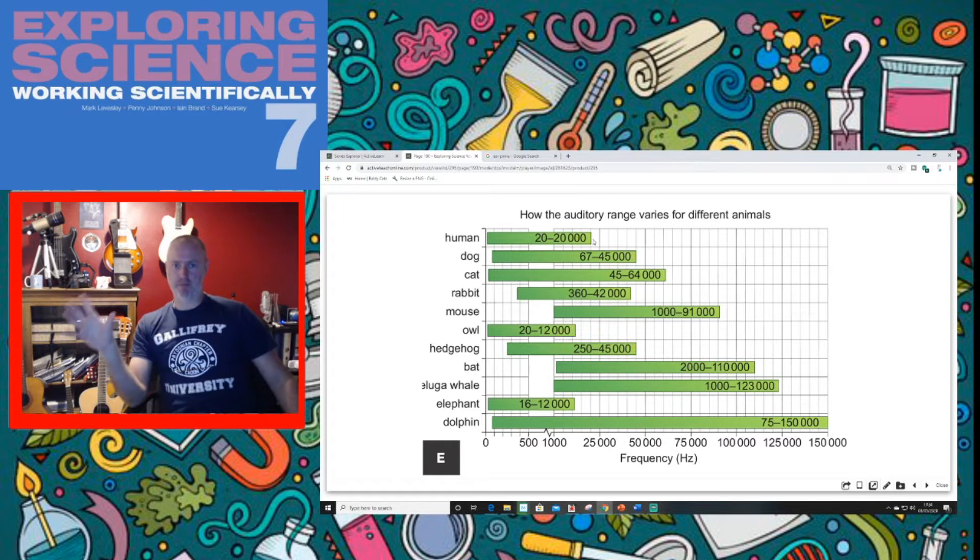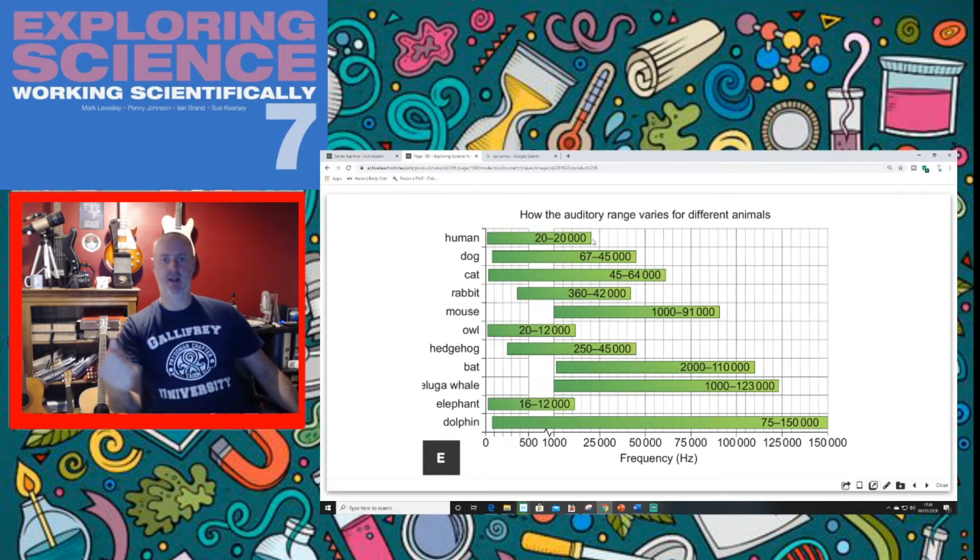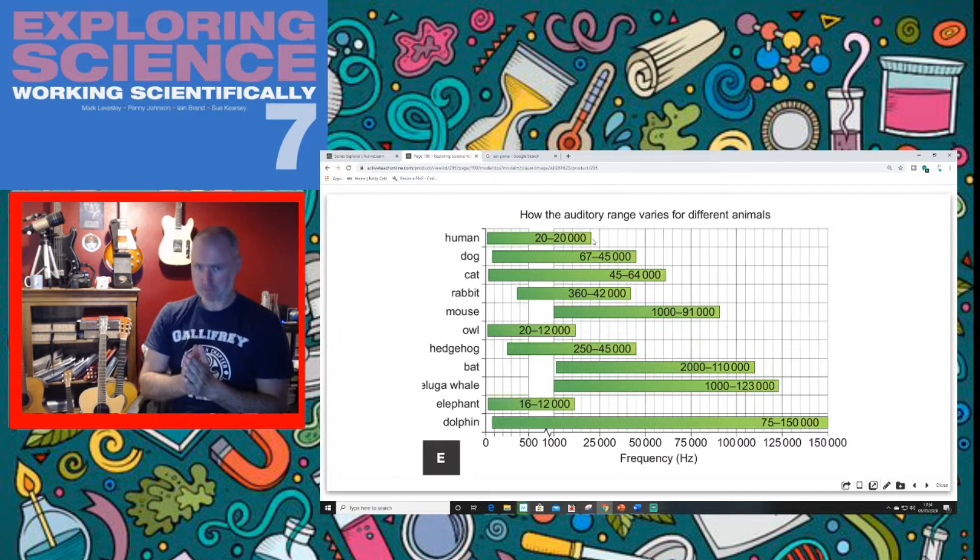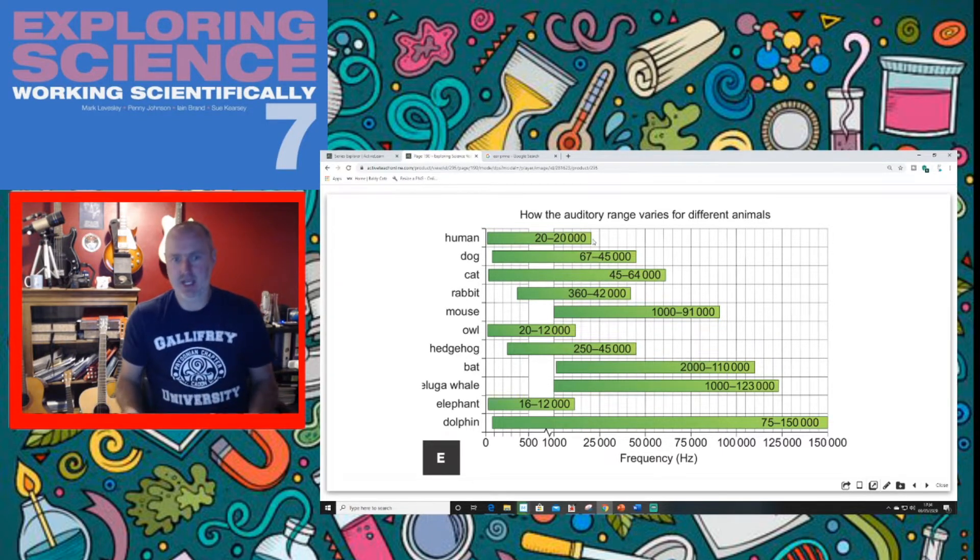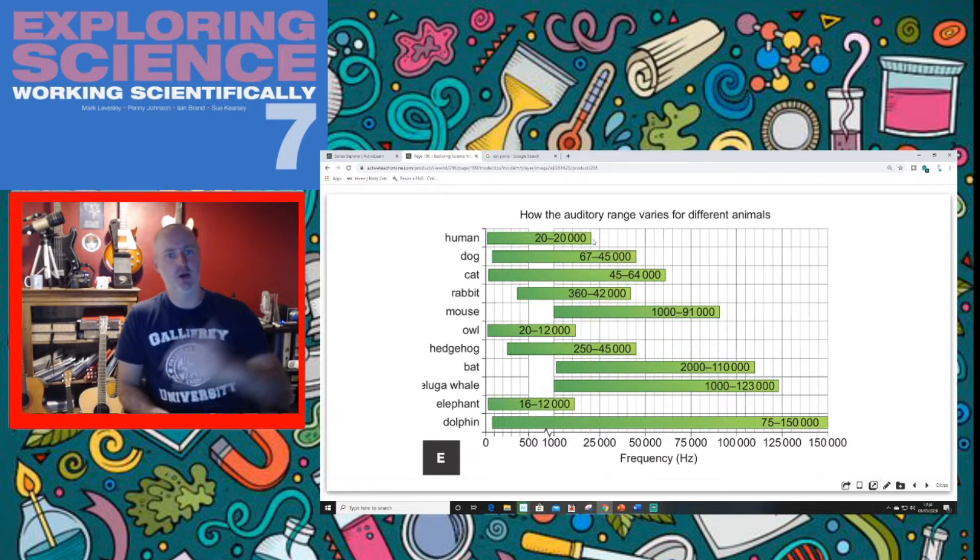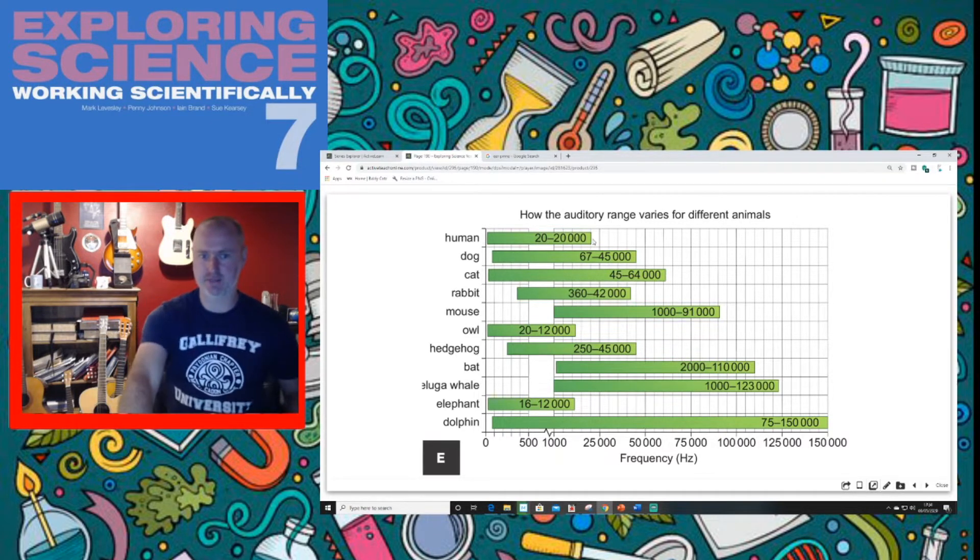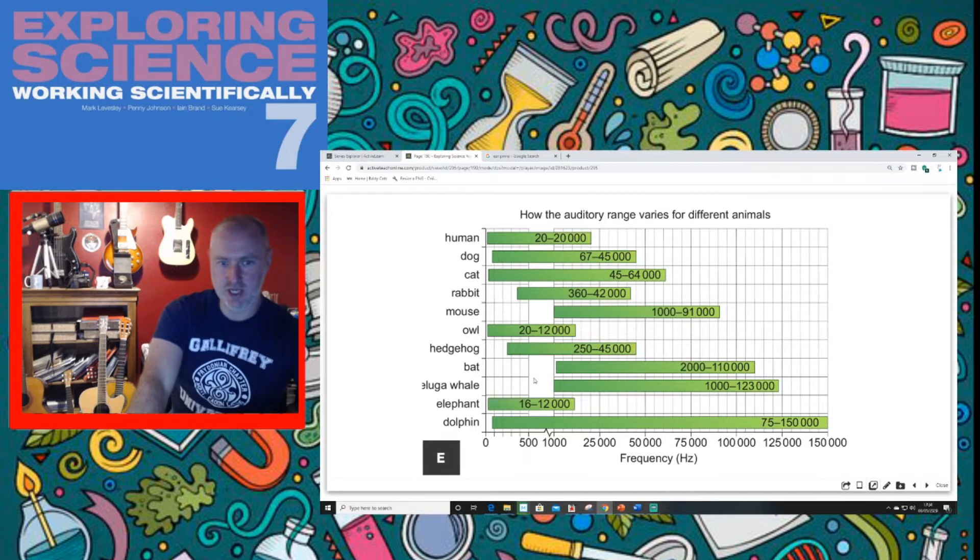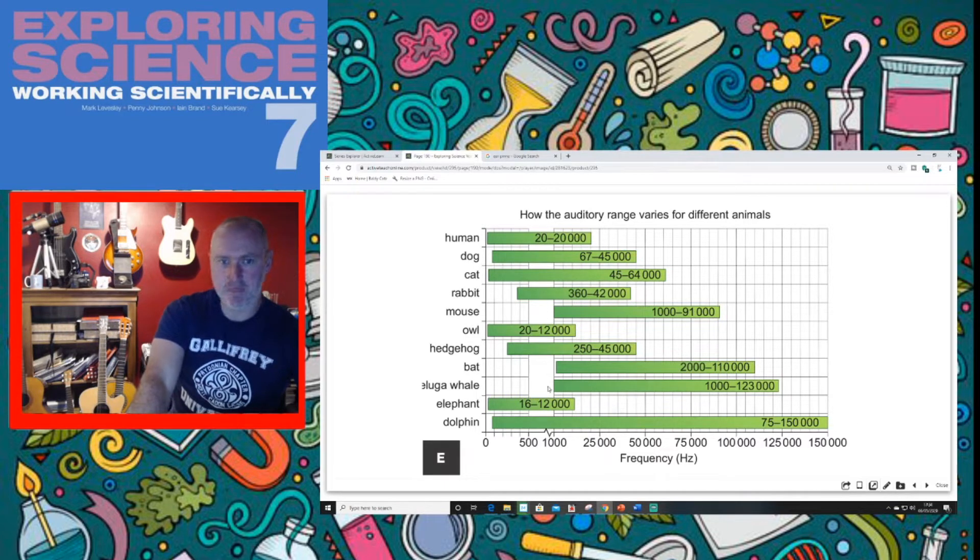Anything below that 20 or above that 20,000 is what we say outside of our auditory range. We can't hear it, but that doesn't mean it's not sound, it's just not sound that our ears can pick up. Microphones can pick it up, other animals may be able to pick it up, and if you pause the video, you'll get a good idea here of the hearing ranges of lots of different animals.